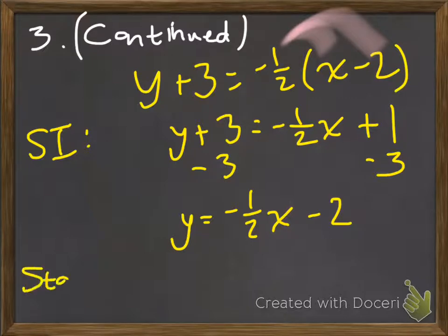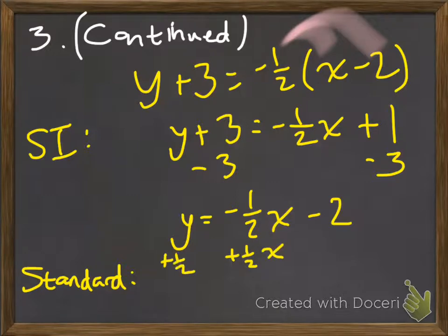Well, what if I wanted you to put it into standard form? Well, you're first going to put your variables on the same side, and then you're going to make sure all of the coefficients of your variables are integers. So you're going to add 1 half x to both sides, and you're going to get, again, these are not like terms because they have different variables, so you're going to get positive 1/2x + y = -2.